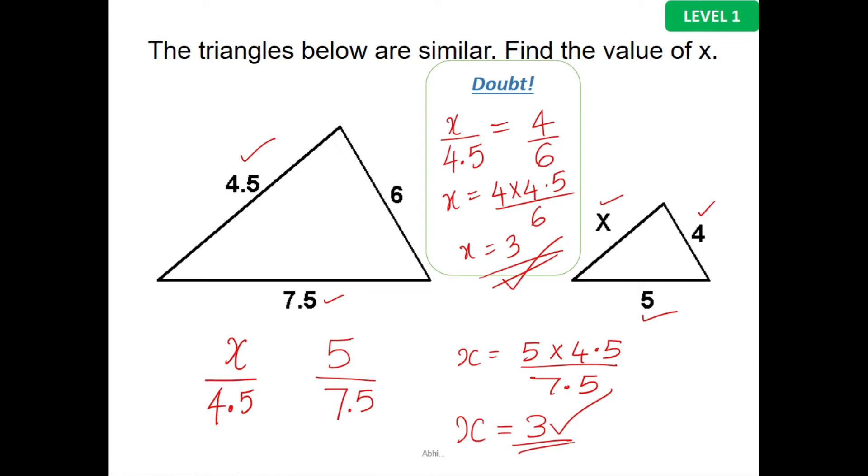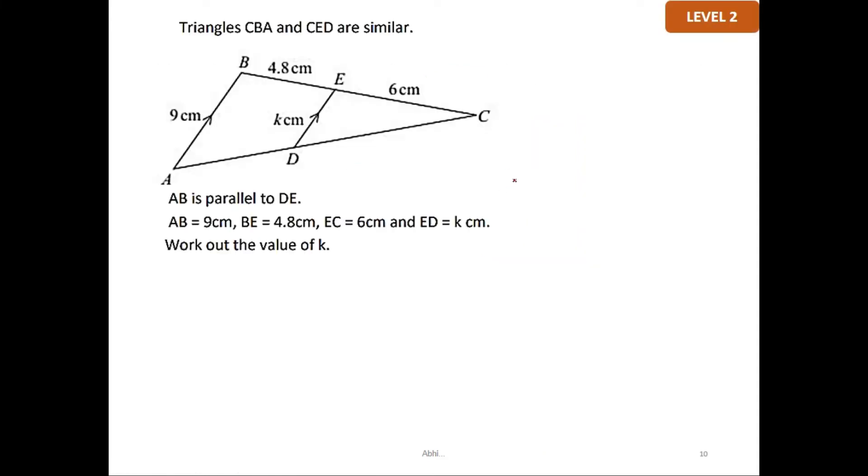Moving on to the next question. In question 2, you have two triangles that are similar: CBA and CED. AB is parallel to DE. AB equals 9 cm, BE is 4.8, EC is 6 cm, and ED is k. Your question is to find the value of k.